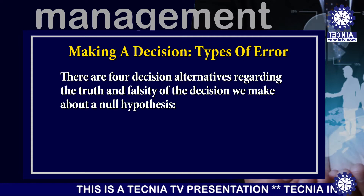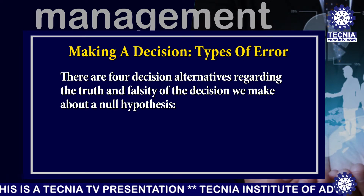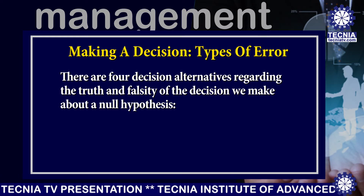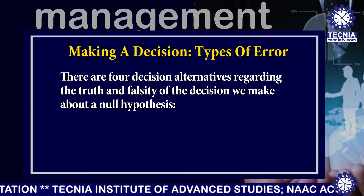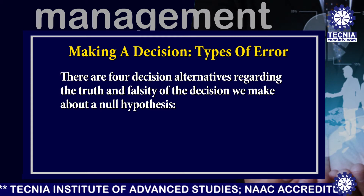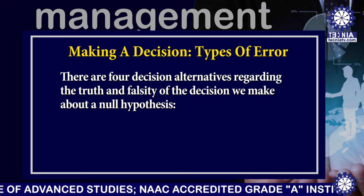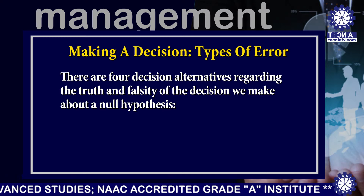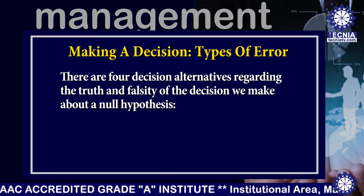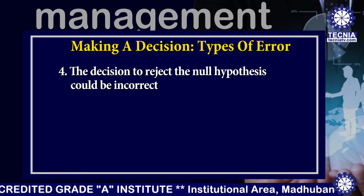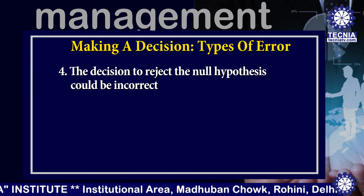There are four decision alternatives regarding the truth and falsity of the decision we make about a null hypothesis. First, the decision to retain the null hypothesis could be correct. Second, the decision to retain the null hypothesis could be incorrect. Third, the decision to reject the null hypothesis could be correct. Fourth, the decision to reject the null hypothesis could be incorrect.